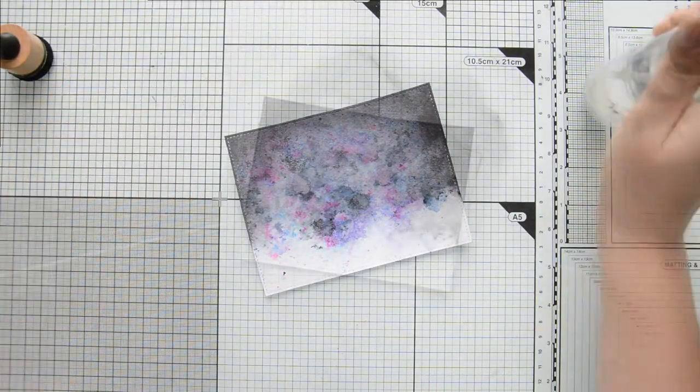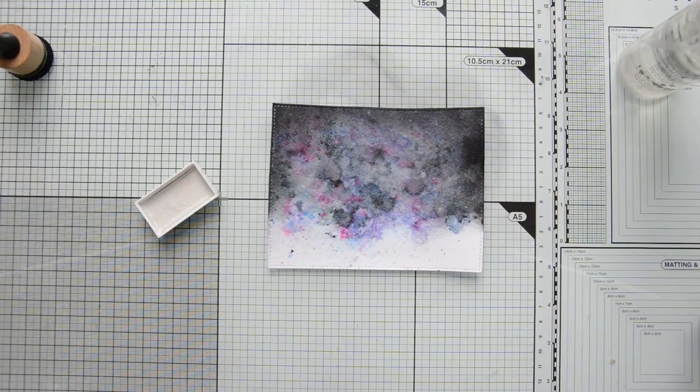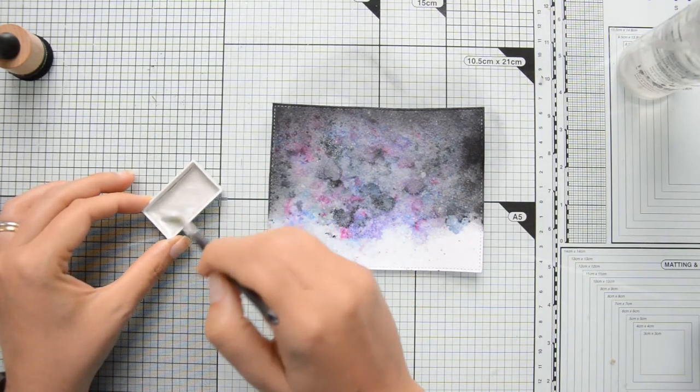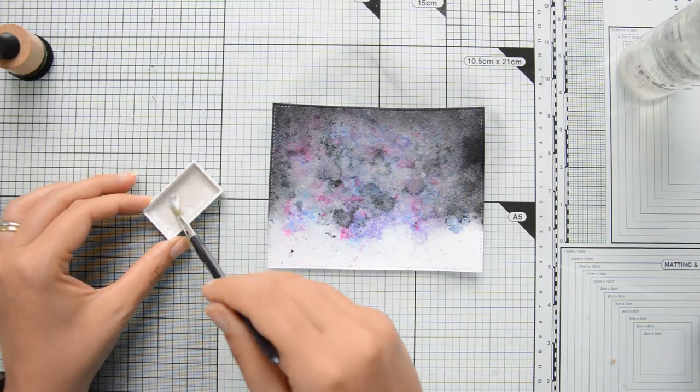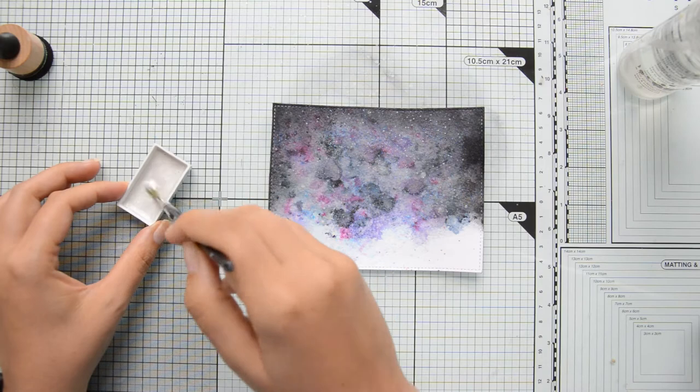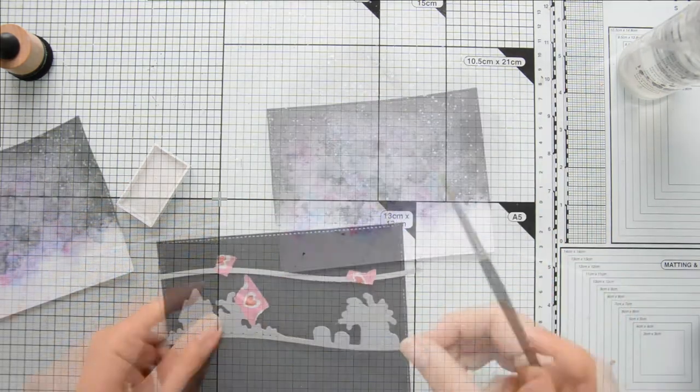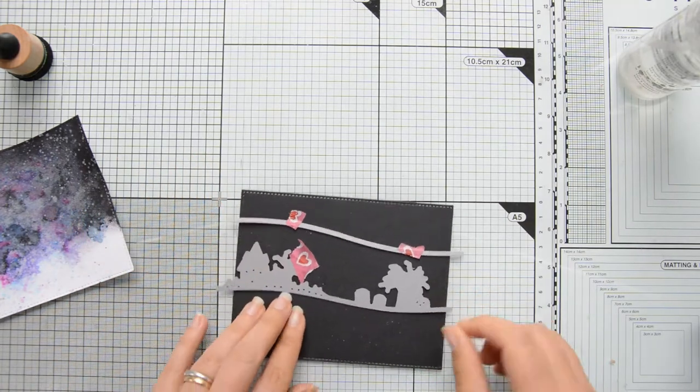I spritzed a little bit of water on top and then added some stars with my Gansai Tambi in the color Silver, from the Starry Colors palette. I activated the watercolor with some water and used a paintbrush to create some stars on my sky background, which I then put aside to dry.